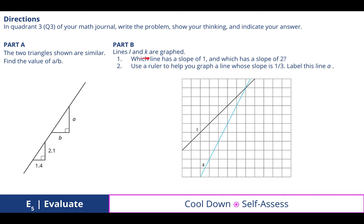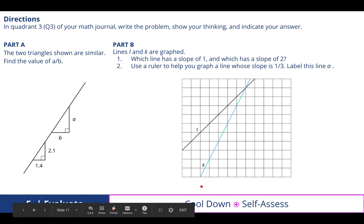In part B, lines L and K are graphed and it's asking you which line has a slope of 1 and which has a slope of 2. Well, if I look at L and I could start here, I could start down here, I could start up here, but if I go up 1, how far over do I have to go to get back to that line? Just 1. So what's 1 over 1? 1. So line L has a slope of 1, which leads me to believe because K is steeper, that that is going to be a slope of 2.